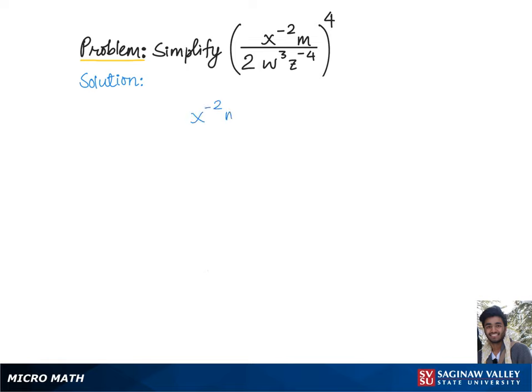To simplify x to the negative 2 times m, over 2 times w cubed times g to the negative 4, with the whole group raised to the 4th power,